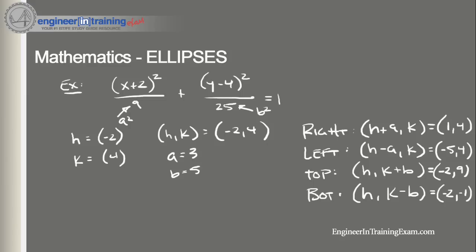So we get that the rightmost point is (1, 4), the leftmost point is (-5, 4), we got the top point at (-2, 9), and we have the bottom point at (-2, -1).